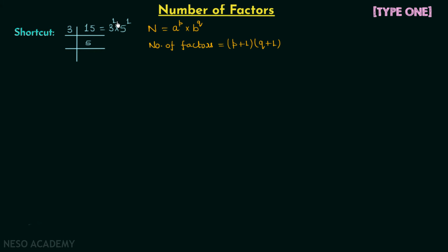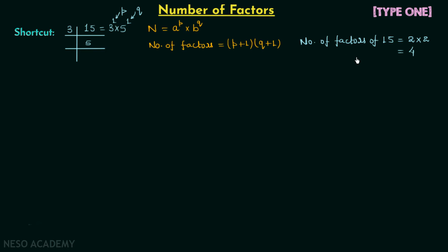Comparing 15 = 3^1 × 5^1 with the standard form, we find p = 1 and q = 1. So the total number of factors of 15 = (p + 1) × (q + 1) = (1 + 1) × (1 + 1) = 2 × 2 = 4. This is the same answer obtained in the previous lecture, confirming the shortcut method works.